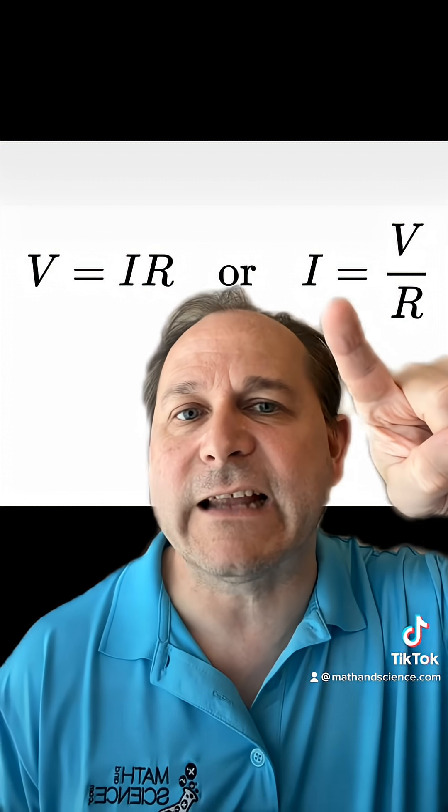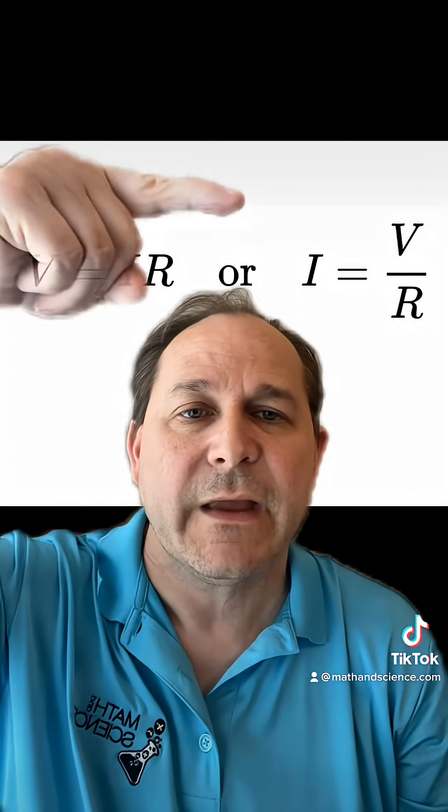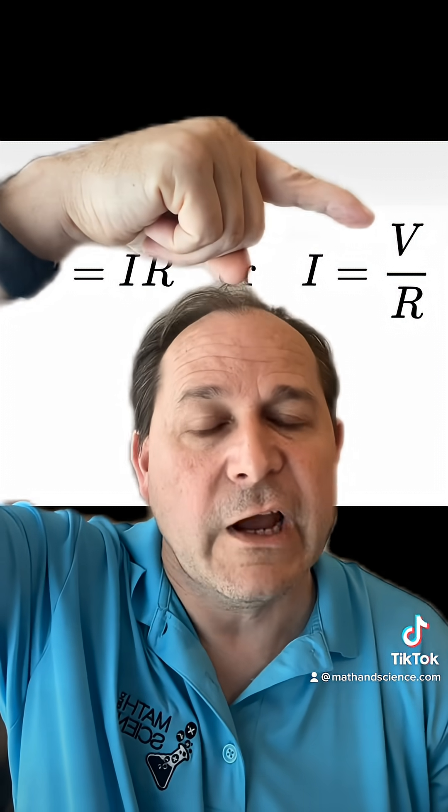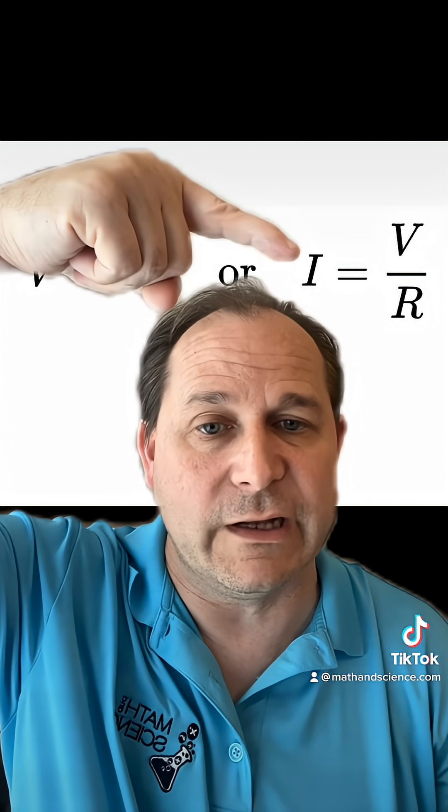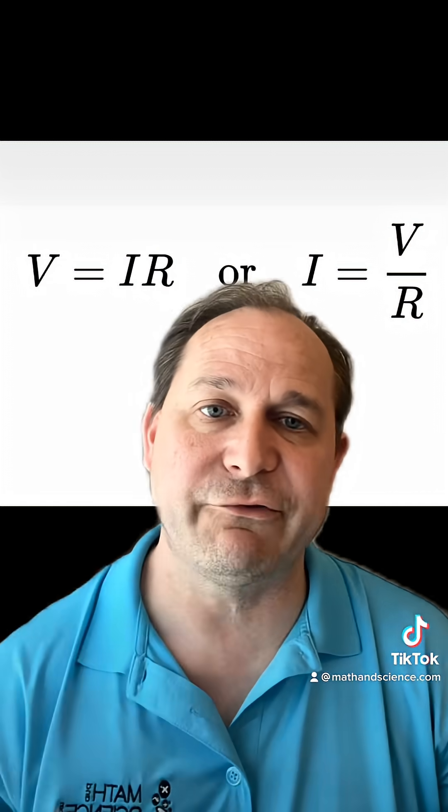What this is basically saying is that the electric current flowing through a circuit is equal to the voltage, which is the push, divided by the resistance. So if you have more of a push, more voltage, then with the same resistance, you will get a larger electric current. And if you have a smaller voltage, meaning a smaller numerator, you will have a smaller electric current.